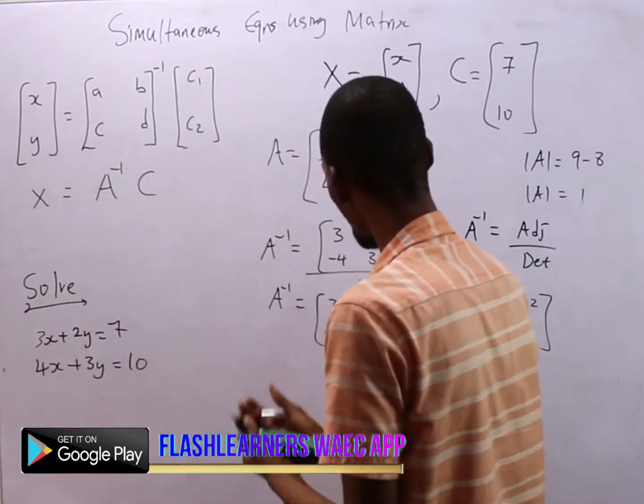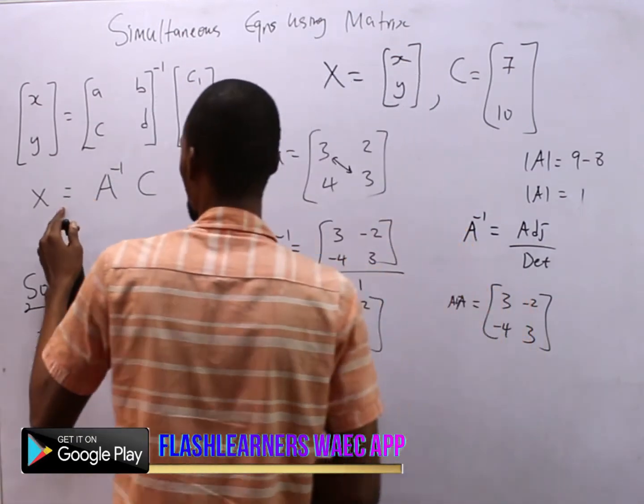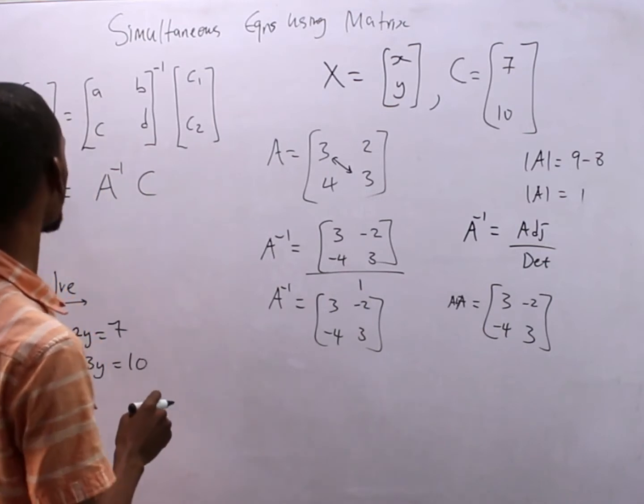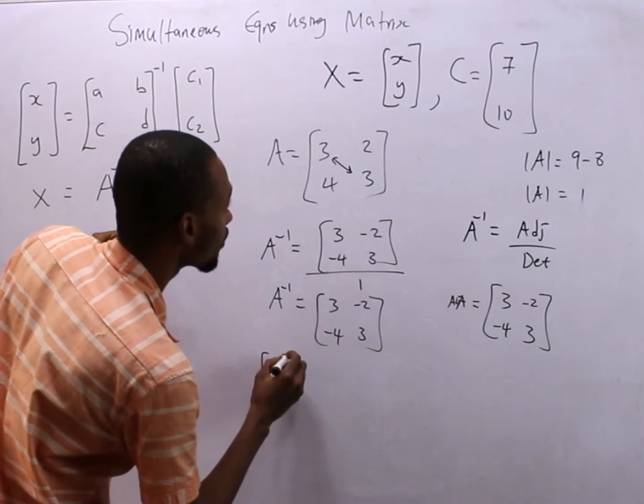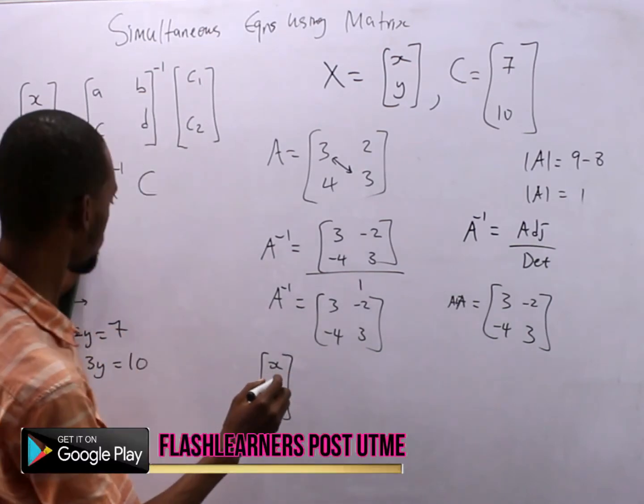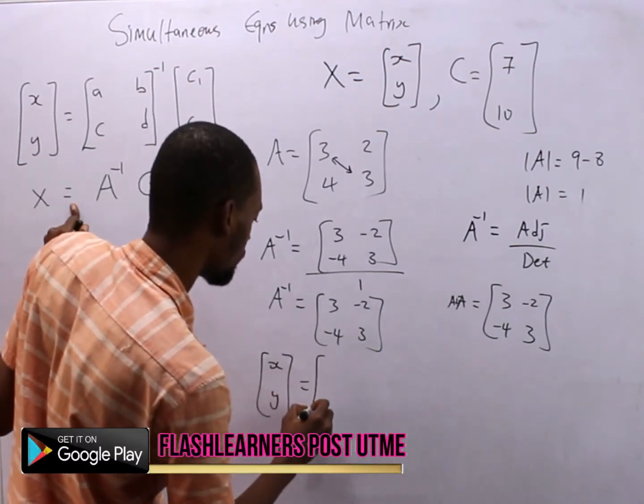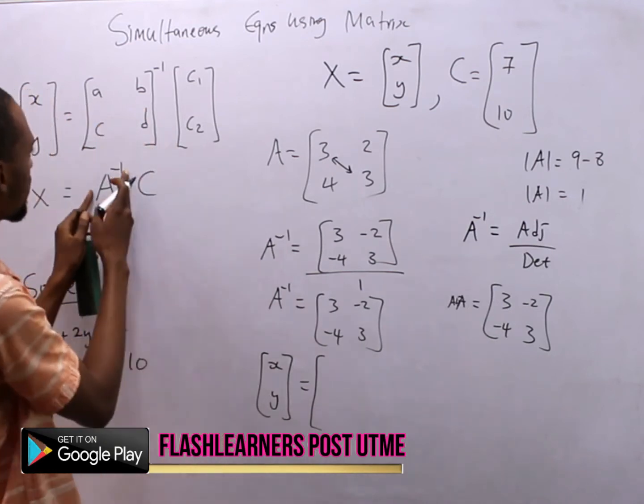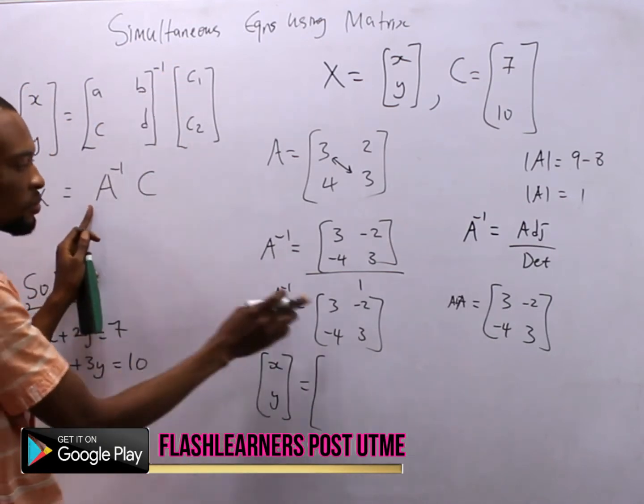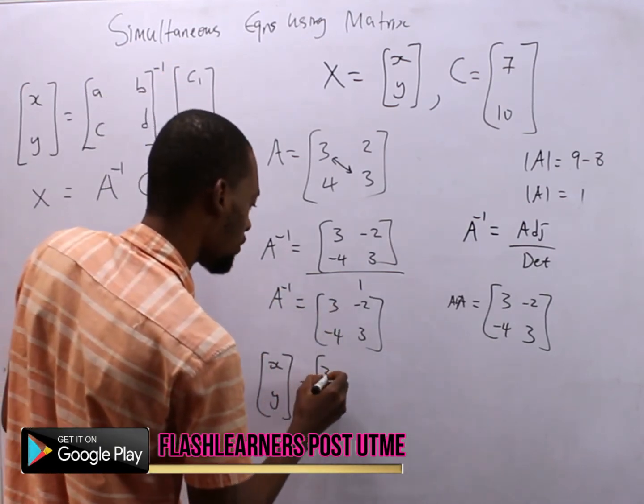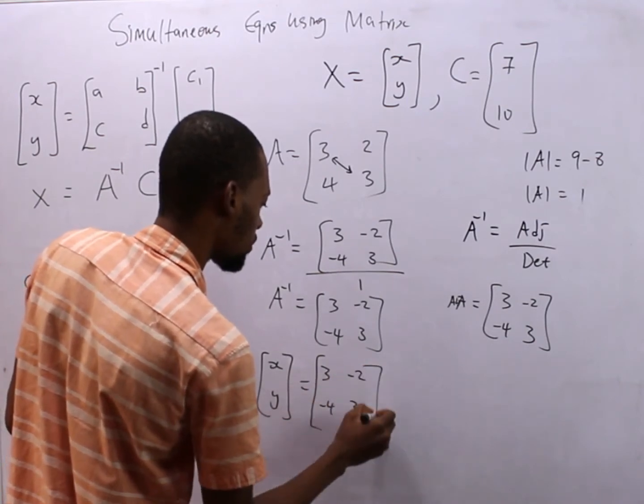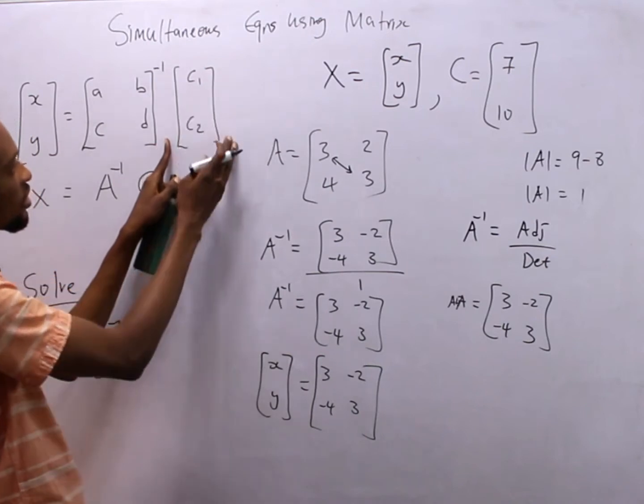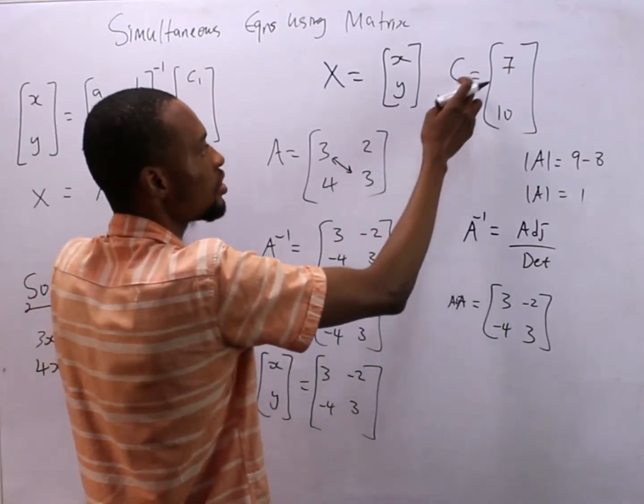So we've gotten everything we want. Let's put it in this equation. X is the same thing as x, y, which is this. So x, y equals A inverse, this inverse. We've gotten A inverse, so that's 3, minus 2, minus 4, and 3, times C, c1, c2 which is 7, 10.